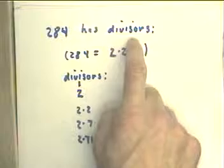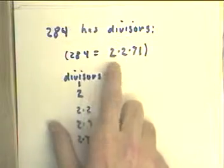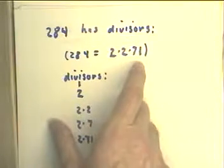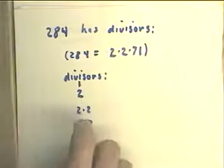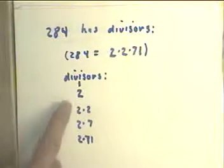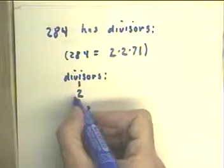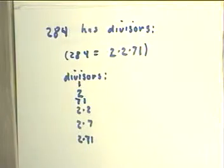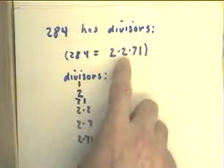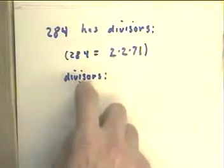284 has divisors. 284 is 2 times 2 times 71, and its divisors are therefore 1 and 2, and listing all the one-factor divisors, we'd better list 71. So the one-factor divisor has to be either 2 or 71, of course there's 1.